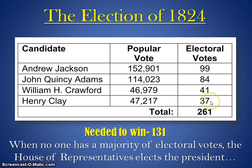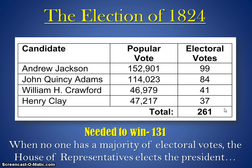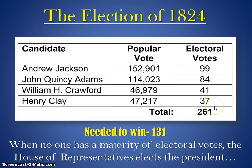There were four men running for president that year — usually there are two. When all the votes were totaled up, no one had a majority. The Constitution says a candidate must get a majority of electoral votes — with 261 total, that means at least 131. When no one has a majority, the House of Representatives elects the president. That year, they elected John Quincy Adams, who didn't have the popular vote or the electoral vote, but still won.